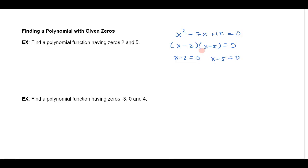each of these factors equal to 0, because if I have two numbers multiplied together to give me 0, one of them has to be 0, and then I'd solve this. I get x equals 2 and x equals 5.